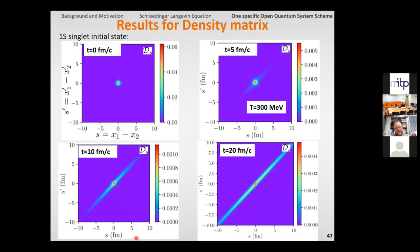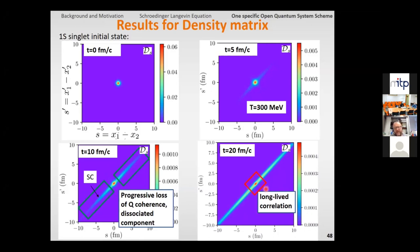If I now look at the density matrix itself, so both here as a function of the relative distance and the conjugate relative distance, one can observe from the coherent behavior here a typical convergence towards semi-classical dynamics here, where the density operator is concentrated along the diagonal, but yet there is still here a long-lived correlation that needs to be better understood.